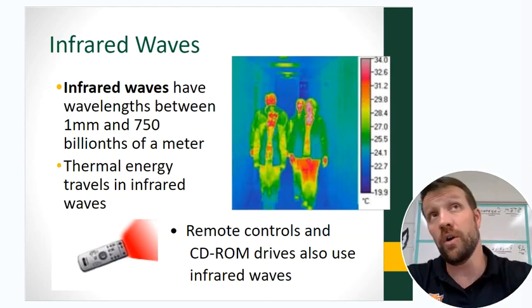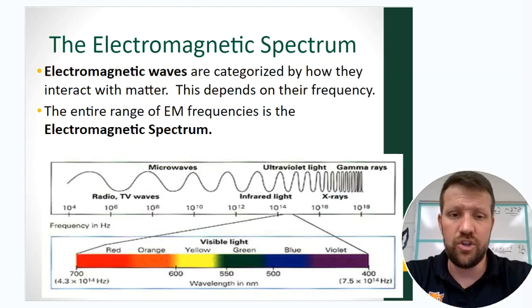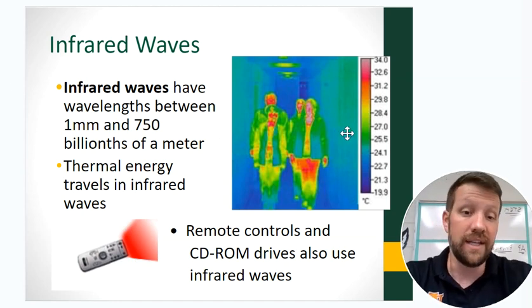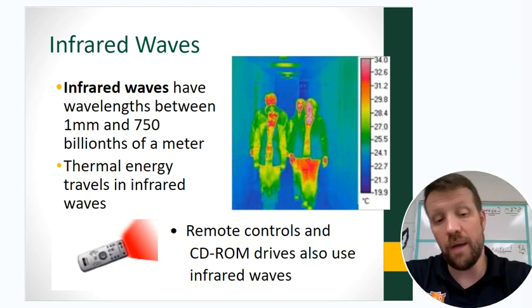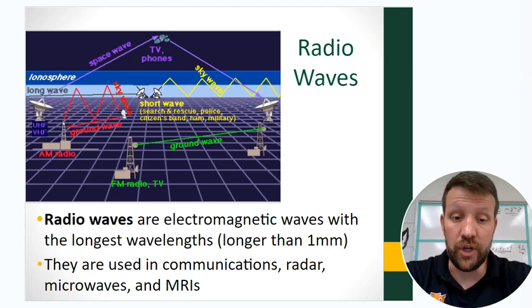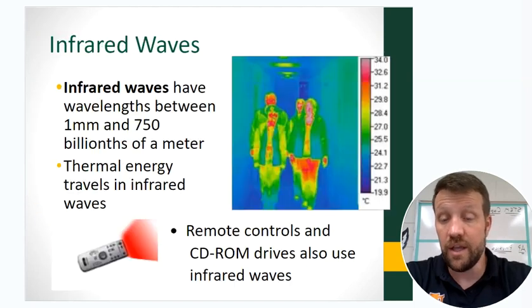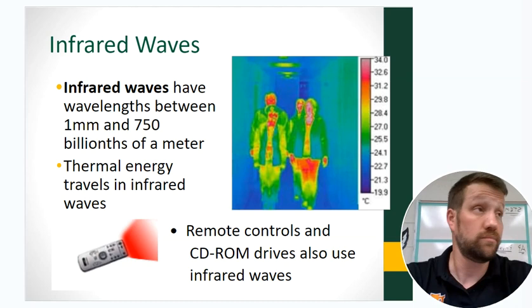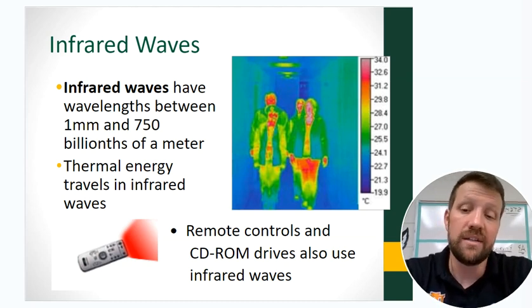With slightly lower wavelengths and slightly higher frequency, we're at infrared waves. Thermal energy travels in infrared waves — like heat vision cameras showing people as warmer than their surroundings. Remote controls and CD-ROM drives also use infrared. Communications range from the longest with radio waves, to medium with cell phones and satellites using microwaves, to shortest with remote controls using infrared — because that energy dissipates as it moves through space, and shorter wavelengths work over shorter distances.